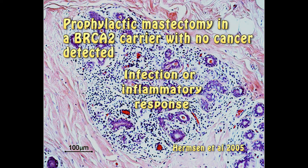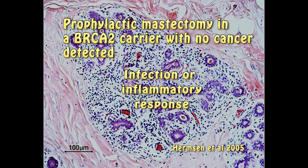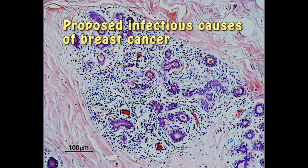Her breast lobe is heavily infiltrated with cells from the immune system, but there are no breast cancer cells. The odds of this woman getting breast cancer are very high, but an infection or an inflammatory reaction has occurred first. Whether some kind of infection is what sets off breast cancer is not known.